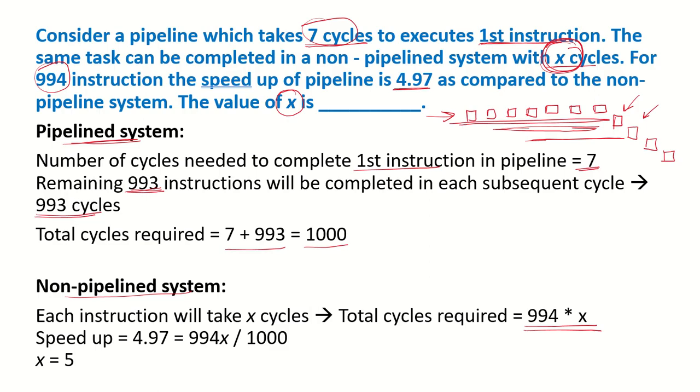What is the speedup? The speedup is the number of cycles required in the non-pipeline system divided by the number of cycles required in the pipeline system, which is 994x divided by 1000, and this equals 4.97. Computing for x, we get x equals 5.